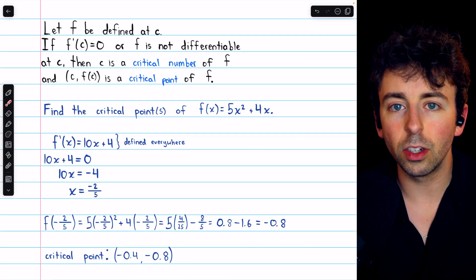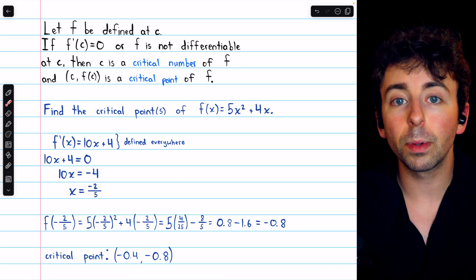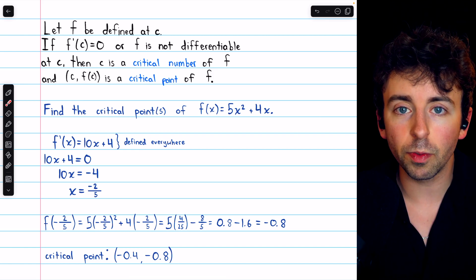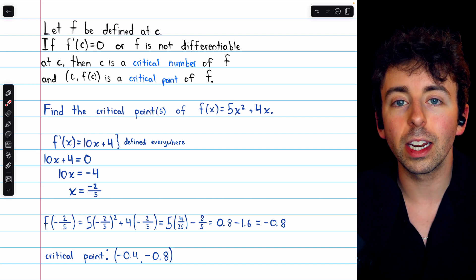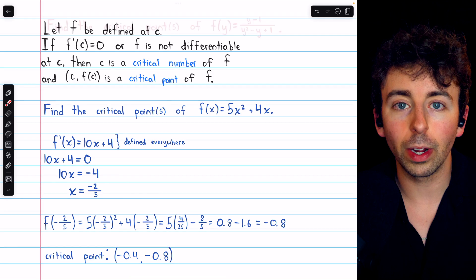So that's all you have to do to find critical points. Find where the derivative is 0 and where it doesn't exist, and then plug those x coordinates into the original function to find the corresponding y coordinates. Then, the ordered pairs are your critical points.